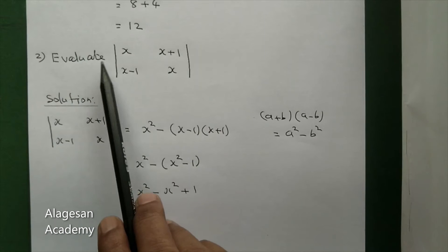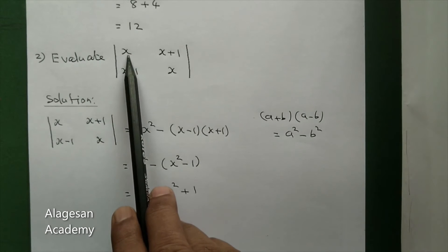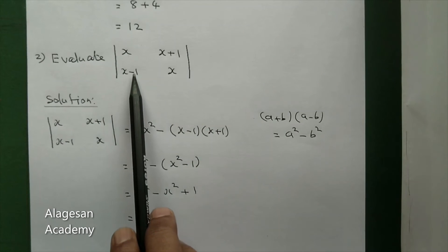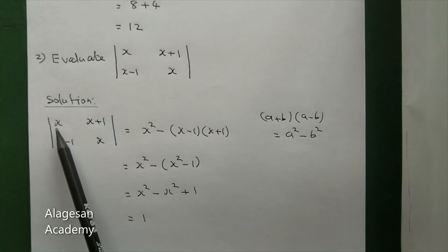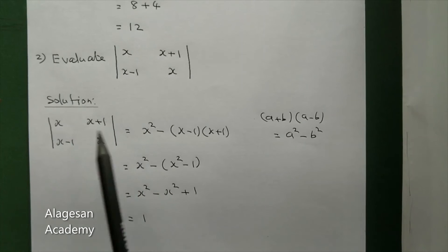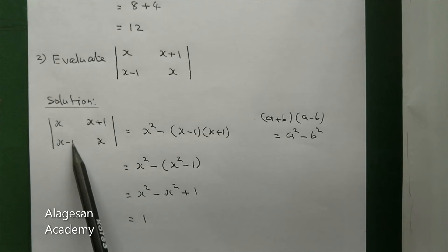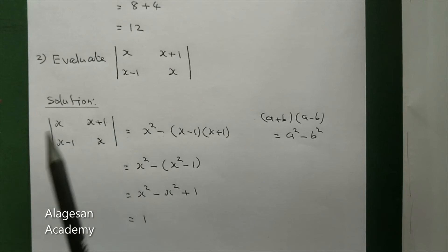Question number 2: evaluate the determinant |x, x+1; x-1, x|. Solution: determinant |x, x+1; x-1, x| equals this into this. x into x is x² minus x-1 into x+1.